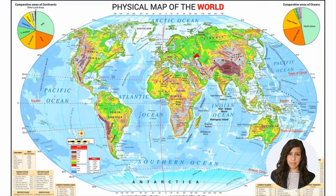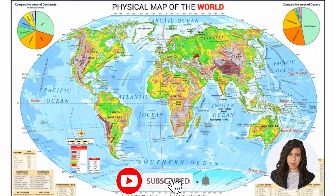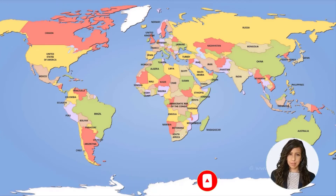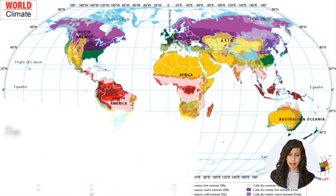Besides these, there are maps that tell us about the industries, population, transport, minerals, crops, soil, natural resources, forests, and wildlife of a region. Maps ke prakar: Physical maps kisi sthan ki physical features jaise pahad, plateaus, plains aur nadiyon ko darshate hain. Deshon, rajon aur unki rajdhaniyon ko political maps par dikhaya jata hai. Kisi kshetra ke climate aur varsha ke baare mein general information climate maps mein dikhai jati hain.